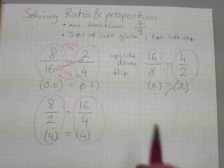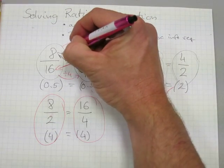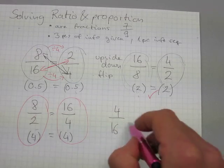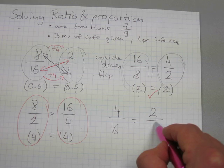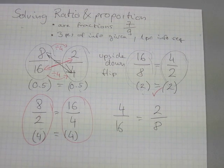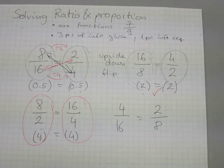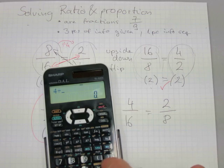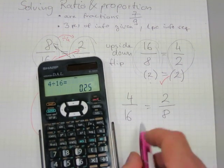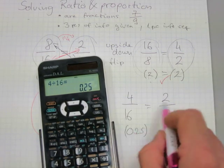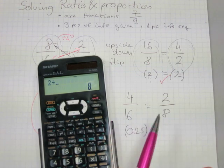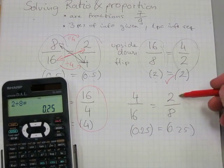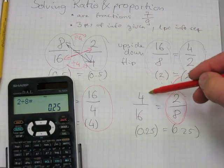There is one more flip we can do. The 8 and the 4 can trade places, giving us 4 over 16 equals 2 over 8. Let's verify: 4 over 16 is 0.25 — a quarter. And 2 divided by 8 also equals 0.25. So the amounts are preserved again — this fraction has the same value as this fraction.